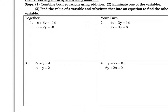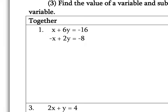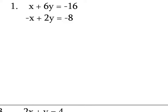Let's look at number 1. Combine both equations by addition. X plus 6Y equals negative 16. Negative X plus 2Y equals negative 8. We're going to use elimination to do these, so let's draw a line there. We're going to combine these downward. We have positive X minus X, which is 0X — phantom 0X.